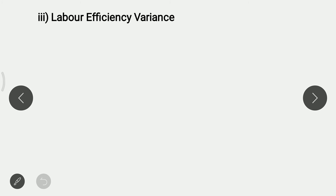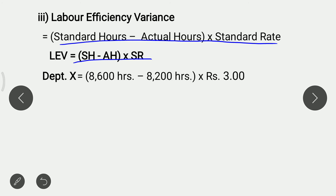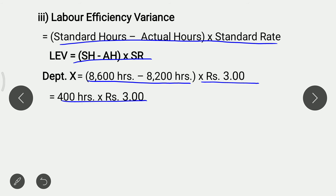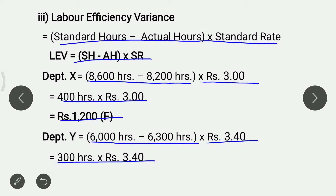Labour Efficiency Variance = (Standard Hours − Actual Hours) × Standard Rate, i.e. SH − AH × SR. For Department X: (8,600 − 8,200) × Rs. 3 = 400 × 3 = Rs. 1,200 favourable. For Department Y: (6,000 − 6,300) × Rs. 3.40 = 300 × 3.40 = Rs. 1,020 adverse Labour Efficiency Variance.